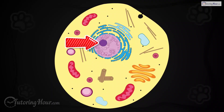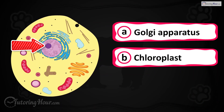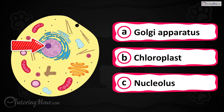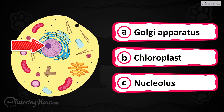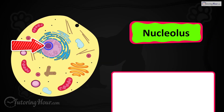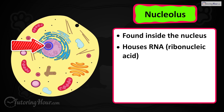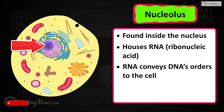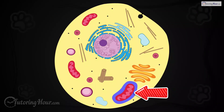Can you identify the highlighted part in the cell? Is it A) Golgi apparatus, B) chloroplast, or C) nucleolus? The correct answer is the nucleolus. It is found inside the nucleus and houses RNA (ribonucleic acid). RNA helps convey the DNA's orders to the rest of the cell and serves as a template for protein synthesis.